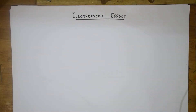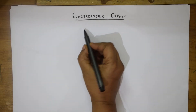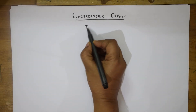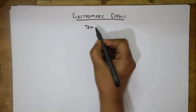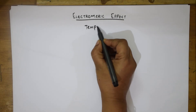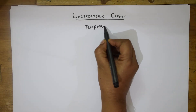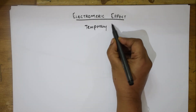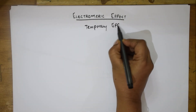We are going to start after inductive effect with one more concept called the Electromeric effect. What actually is inductive effect? It is a permanent effect, as we have told. When it comes to Electromeric effect, Electromeric effect is a temporary effect. This is the first thing you should remember.